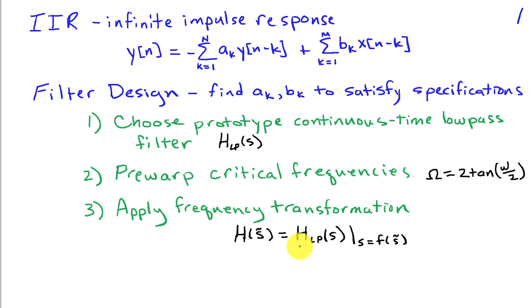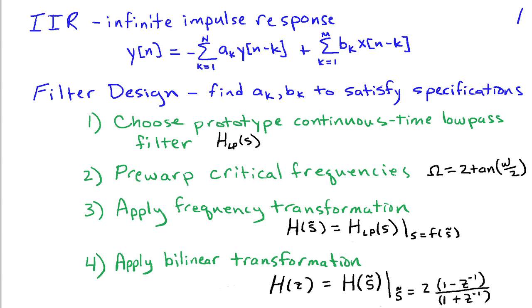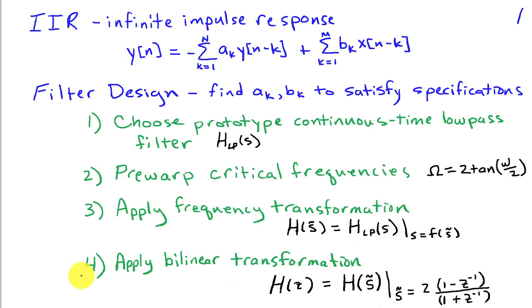Next, we apply a frequency transformation to our low pass filter to convert it to the desired type. For example, we may wish to convert our low pass filter to a band pass filter, in which case we use a low pass to band pass frequency transformation. And then finally, once we have a continuous time filter that satisfies our specifications, we can convert that to a discrete time filter by replacing the continuous time Laplace transform variable S tilde with the bilinear transform, or 2 times 1 minus Z inverse divided by 1 plus Z inverse.